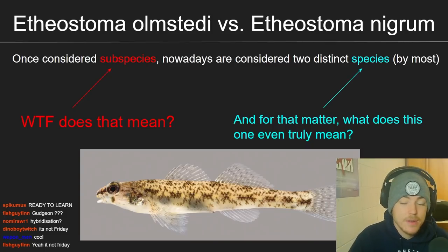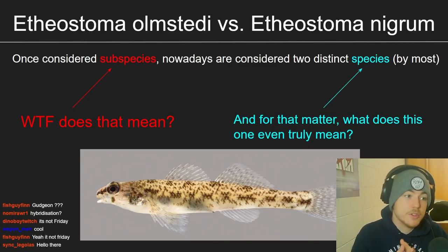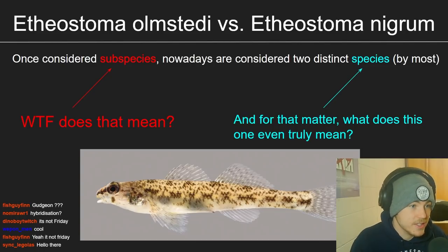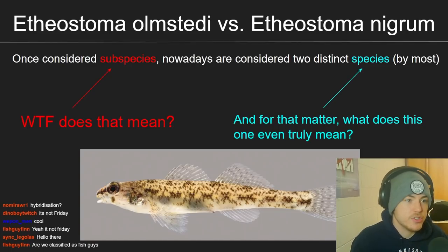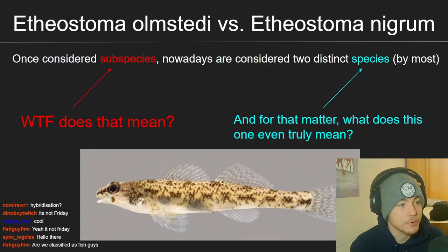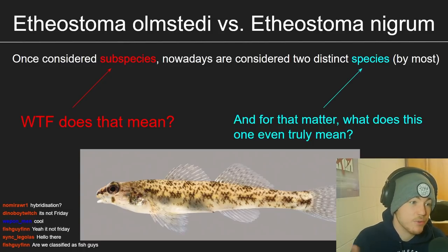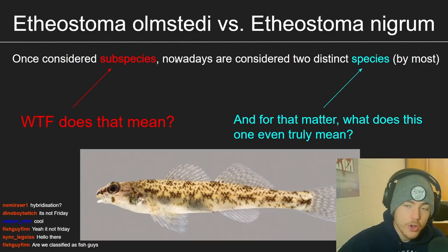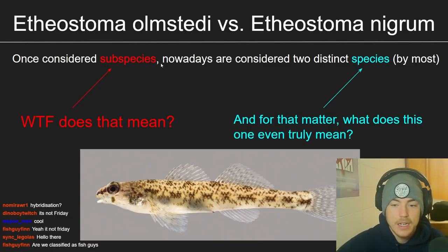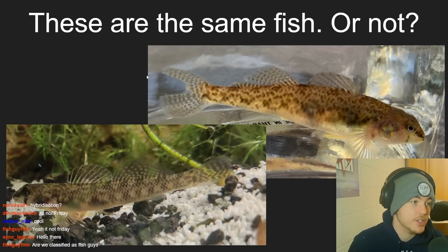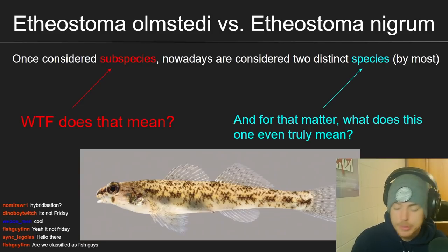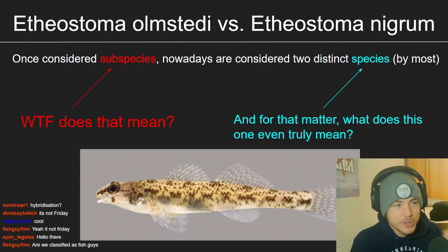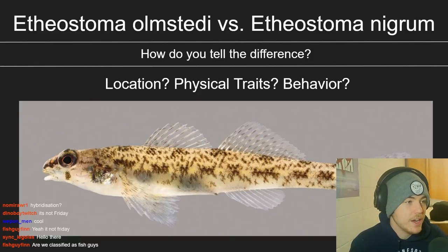If two fish can have babies and those babies are still able to have babies, those are considered the same species. However, sometimes you have two things that could breed — they just don't. They might be too far away, or maybe they've developed different mating patterns or preferences, so they never actually end up breeding. That's when you have subspecies, because they technically are the same species — they could interbreed and create viable offspring, they just don't. That's what we used to consider the tessellated and the johnny darter. Nowadays we actually consider them their own species, but how much sense does that definition actually make?